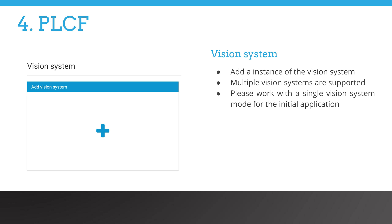Returning to the actual web user interface of Bin Picking Studio. In this section of the vision system, you can add an instance by clicking the icon shown on the right-hand side of the slide. The application supports multiple vision systems. Each vision system represents a scanner dedicated to a particular scene, usually the bin with the parts, together with the corresponding localization configuration file. Please use a single vision system for the first pick to streamline the bin picking pipeline. This will make fine-tuning of the system easier.